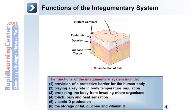The functions of the integumentary system include: 1. A provision of a protective barrier for the human body. 2. Playing a key role in body temperature regulation through the evaporation of sweat from the surface of the skin. 3. Protecting the body from invading microorganisms. 4. Touch, pain, and heat sensation.